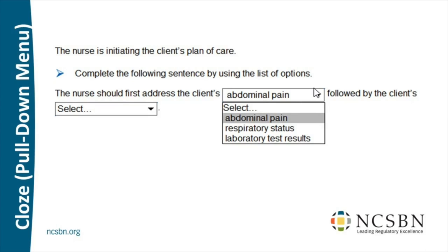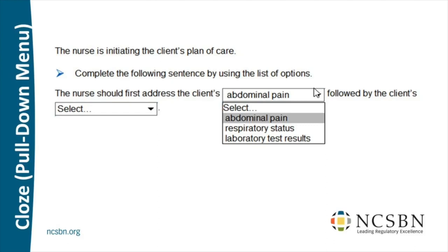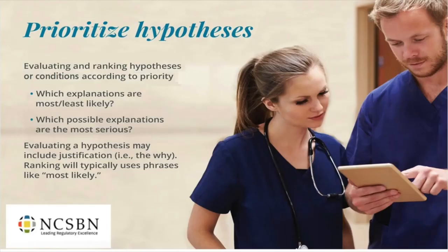In terms of the clinical judgment measurement model, the nurse here is clearly prioritizing. Our third box is all about prioritizing — the full name is 'prioritize hypotheses.' But it can come in two flavors: sometimes prioritizing hypotheses (what's most likely happening here), and sometimes prioritizing conditions (aspects of the client situation). What unites them is that prioritization is always step three.